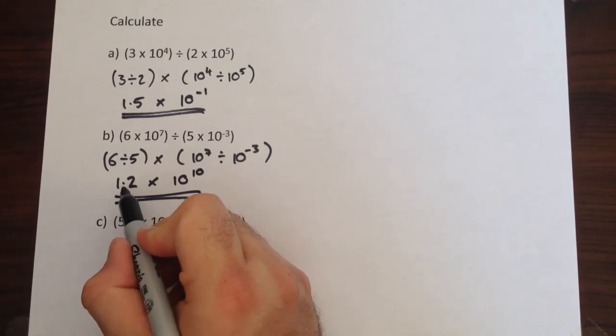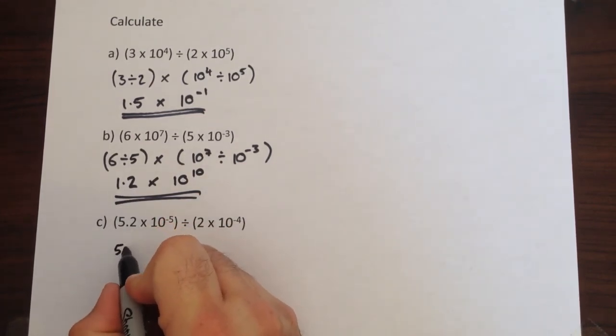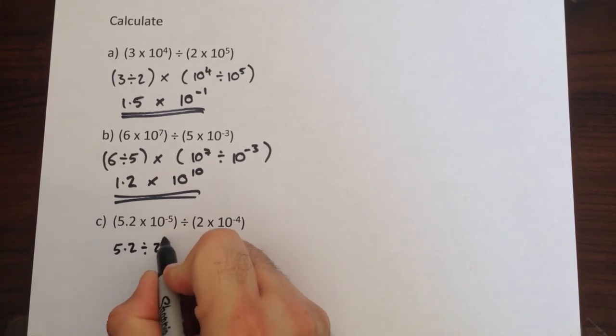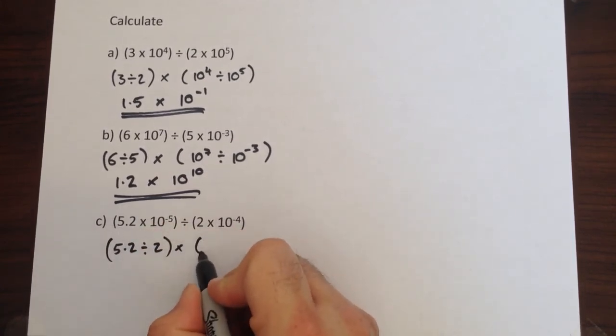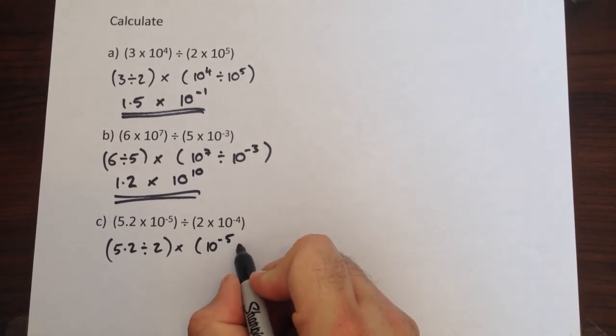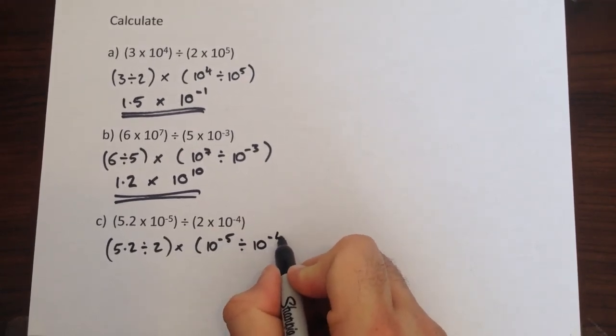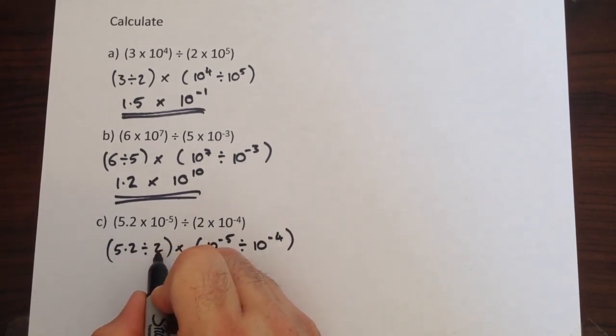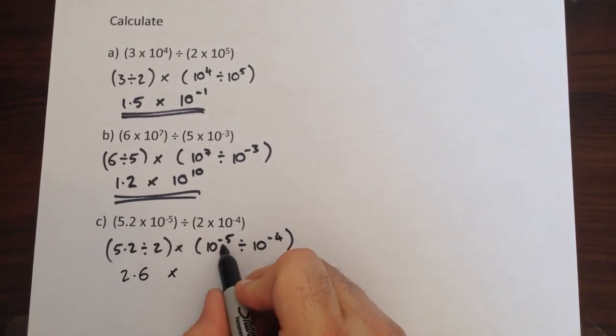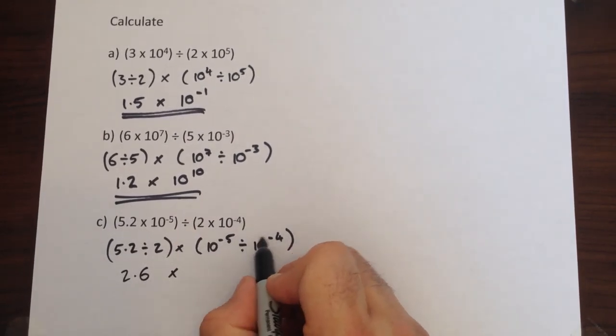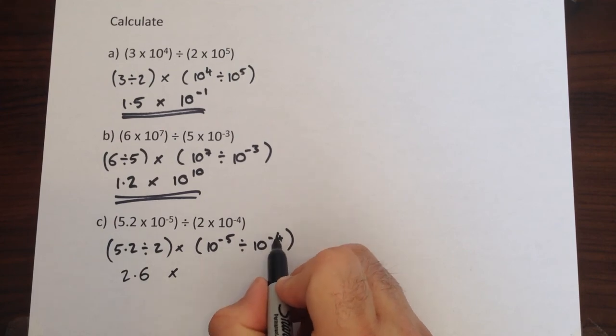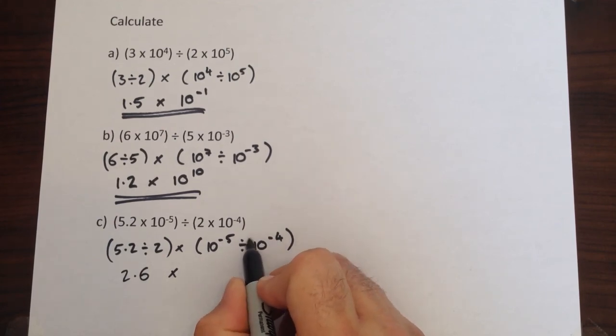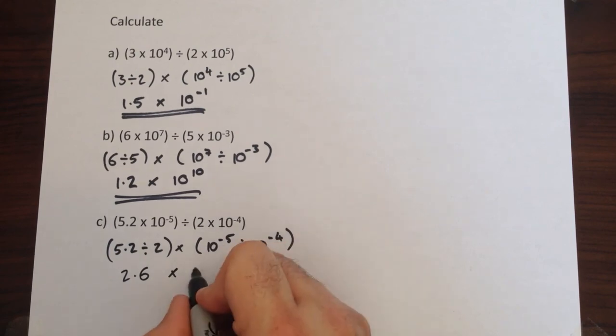Same method here, 5.2 divided by 2, that's going to be multiplied by 10 to the negative 5 divided by 10 to the negative 4, so slightly trickier because there's two negatives. 5.2 divided by 2 is fairly straightforward, that's 2.6. Negative 5 divided by negative 4, so you subtract the powers. Negative 5 take away a negative 4 is the same as adding it on, so negative 5 add 4 gets you to 10 to the negative 1.